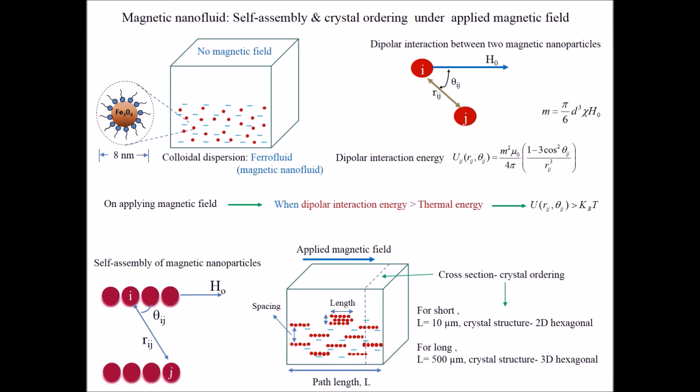Now, ordering of these chains and columns result in different crystal structures depending on the sample path length. For very short path length of 10 micrometer, the crystal ordering is 2D hexagonal, which transforms to 3D hexagonal on increasing the sample path length to 500 micrometer, as known from the literature.